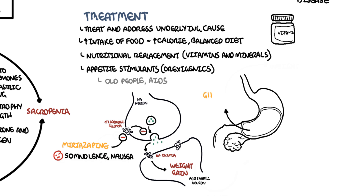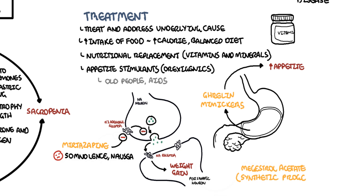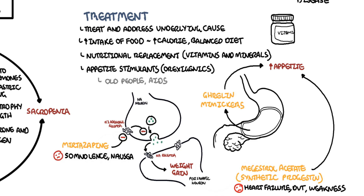There are also ghrelin mimickers, which stimulate appetite. Ghrelin is a normal hormone produced by the stomach that stimulates appetite, and so ghrelin mimickers replicate this effect. Megestrol acetate consists of synthetic progestins and also helps stimulate appetite; important side effects include heart failure, deep vein thrombosis, and generalized weakness. Finally, dronabinol is a cannabinoid that works on neuronal receptors and promotes weight gain through various mechanisms.